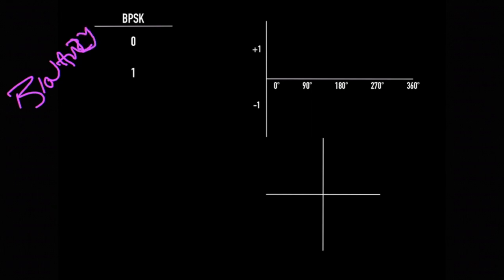If we assign the 1 to a sine wave, let's look what that would look like. Sine wave starts at 0, goes up to 90, crosses at 180, and then comes back to 360.